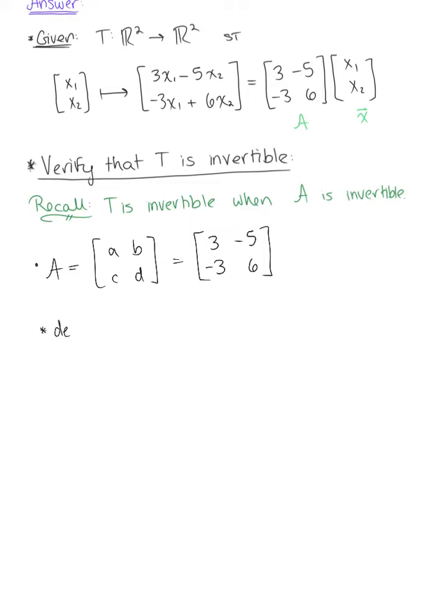So we have the determinant of A, which again is ad - bc. So I have 3 times 6, which is 18, minus negative 3 times negative 5, so we have minus 15, which leaves us with 3, which does not equal 0. So we can say therefore A is invertible and therefore our linear transformation is also invertible.